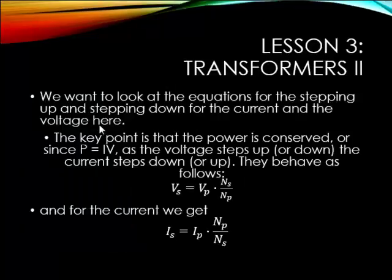So continuing our lecture today and wrapping up, I want to finish a little bit more on transformers. Again, I want to look at the equations for stepping up and stepping down the current voltage here. The key point that keeps this in control is no matter what's going on between the two coils of the transformer, power or the energy dissipated by time has to be conserved. And the reason being is energy is always conserved.